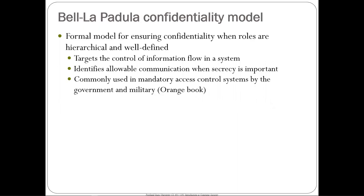The first is the Bell-LaPadula confidentiality model — a formal model for ensuring confidentiality when you have security roles and objects that are hierarchical and well-defined. Someone has taken great pain to label the subjects and objects, then builds a strict model for mediating access that guarantees confidentiality. It specifies allowable communication between subjects and objects and targets the control of information flow. It's typically used in government and military systems. There's a famous orange book that is like the Bible for this, written in the sixties, and it hasn't been updated because it's actually correct.